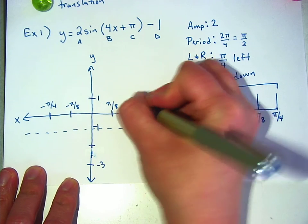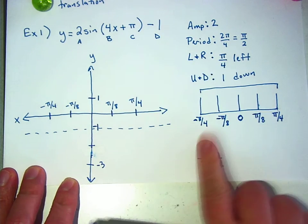Pi over 8 and pi over 4. Does it help, do you think, to make this little number line on the side?